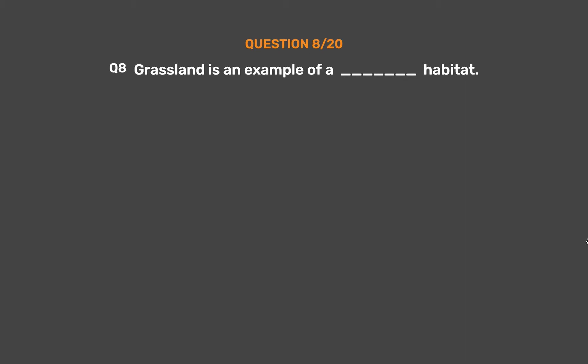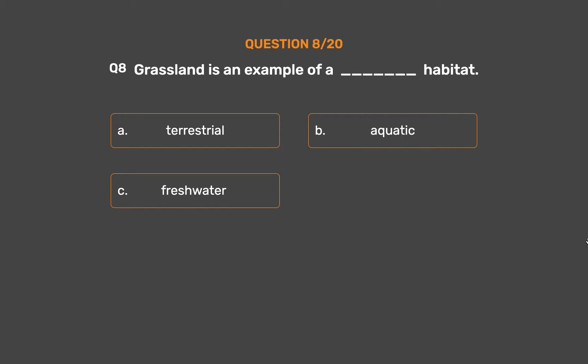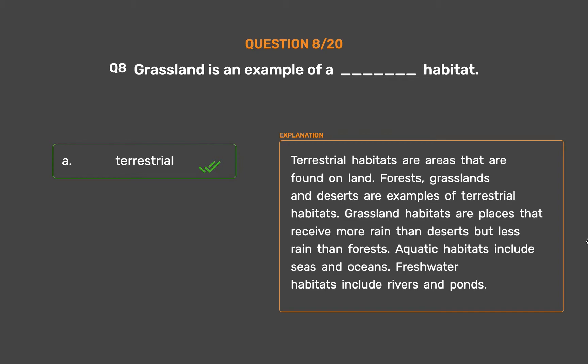Question 8. Grassland is an example of a blank habitat. Option A: Terrestrial. Option B: Aquatic. Option C: Freshwater. Option D: Desert. The correct answer is Option A: Terrestrial. Terrestrial habitats are areas found on land. Forests, grasslands and deserts are examples of terrestrial habitats. Grassland habitats receive more rain than deserts but less rain than forests. Aquatic habitats include seas and oceans. Freshwater habitats include rivers and ponds.